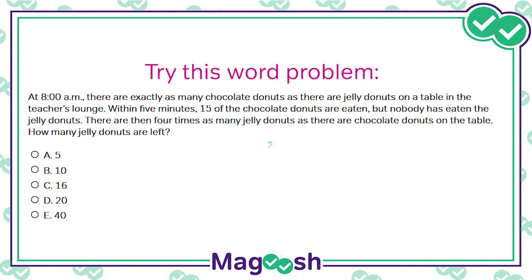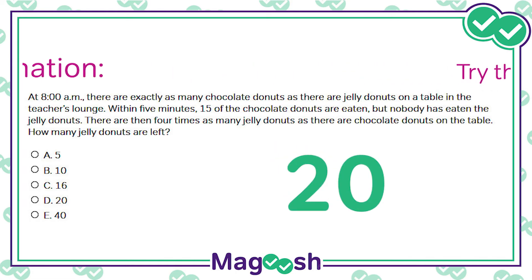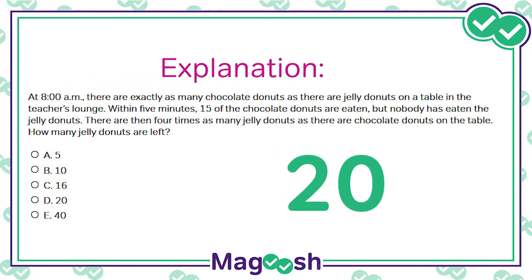Answer: 20. So where should you start? How about with C? After all, neither A nor B is divisible by 4, which the answer probably will be since the number of jelly donuts is 4 times that of the chocolate. And A is definitely too small.